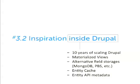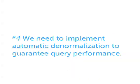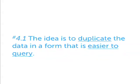Based on the first three points, my fourth point is that we need to implement automatic denormalization of our data to guarantee querying performance. It's actually the only way to guarantee querying performance. I emphasize 'automatic' because we do that manually all the time and that really needs to stop. The basic idea is to duplicate the data in a form that is easier to query — store it once in a canonical storage and denormalize it in a way that is easier to query, mostly in a single table.